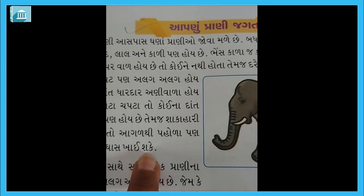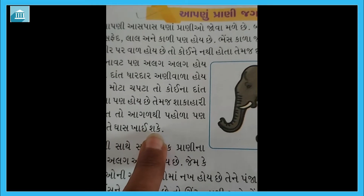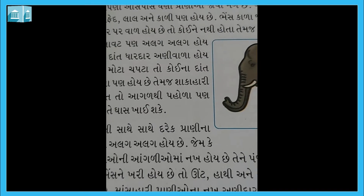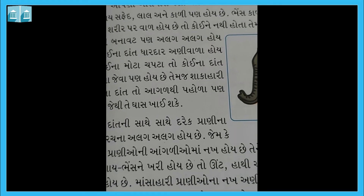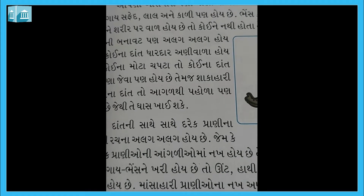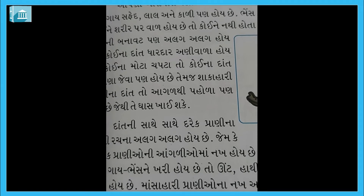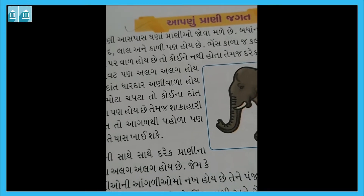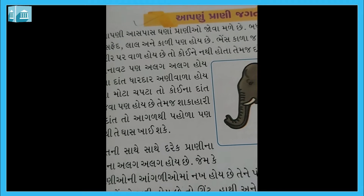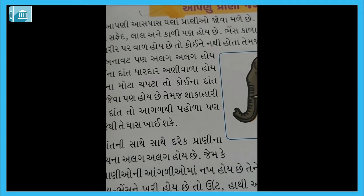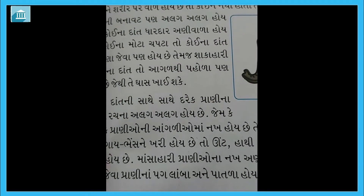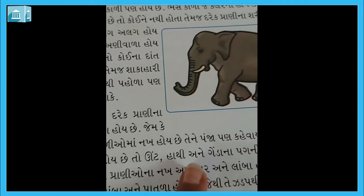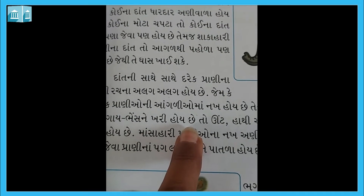કોઈ પ્રાણીના દાંત આપણા જેવા પણ હોય, માંસ્ય જેવા પણ હોય. શાકાહારી પ્રાણીના દાંત આગળથી પ્હોળા પણ હોય છે, જેથી તે ઘાસ ખાઈ શકે. પ્રાણીઓના શરીરની રચના પણ અલગ-અલગ હોય છે. કેટલાક પ્રાણીઓની આંગળીઓ પર નખ હોય છે, જેને પંજા પણ કહેવાય છે. ગાય-ભેંસને ખરી હોય છે.